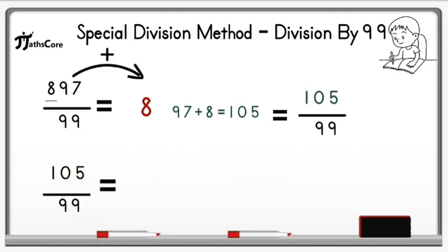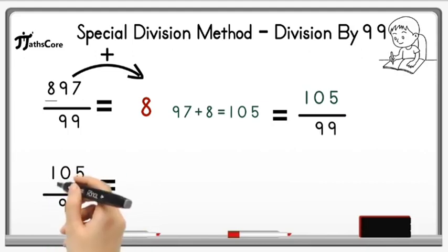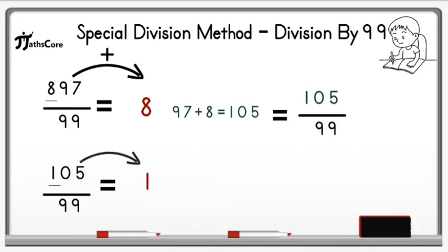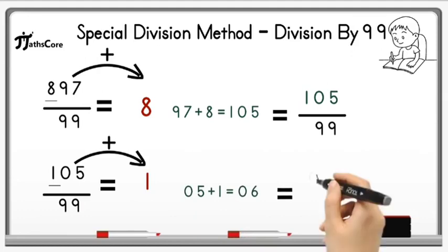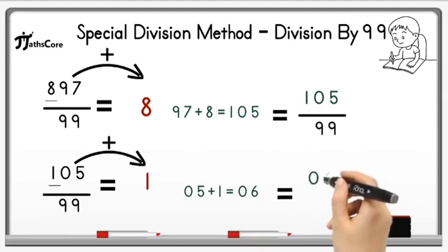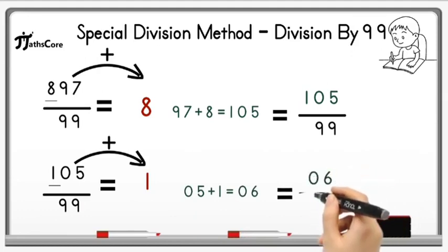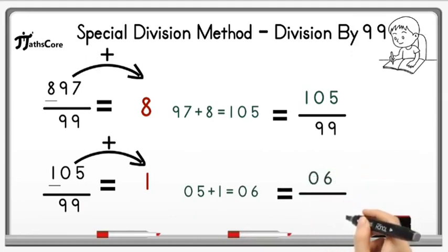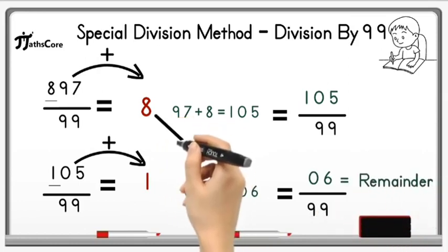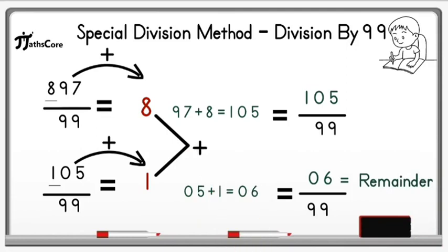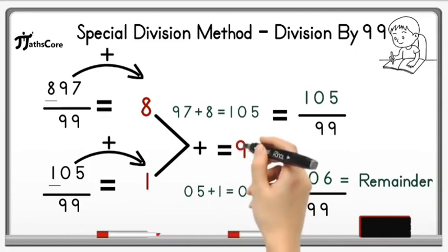Write down the hundreds digit, which is 1, and add 05 to it. So 05 plus 1 equals 06. Divide 06 by 99 — not possible because 06 is less than 99. So 6 is the remainder. To find the quotient, we add 8 and 1 together: 8 plus 1 equals 9, and 9 is the quotient.